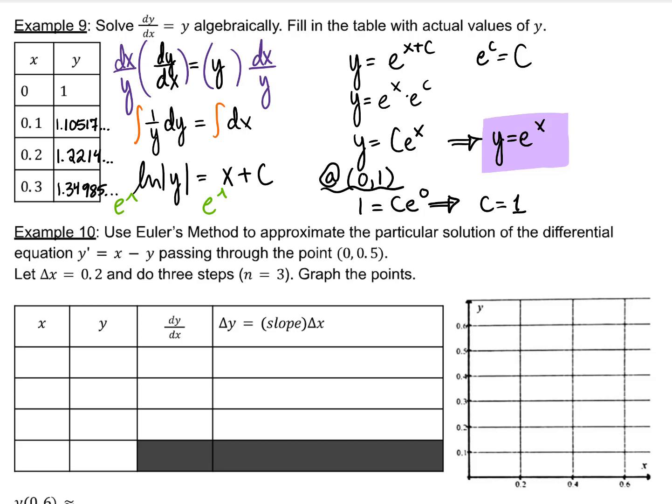As you can see, the further away we got from our initial point, the less accurate our y values were, but even still, Euler's method is more precise than simply using local linearization or just estimating through a slope field what the graph would look like.